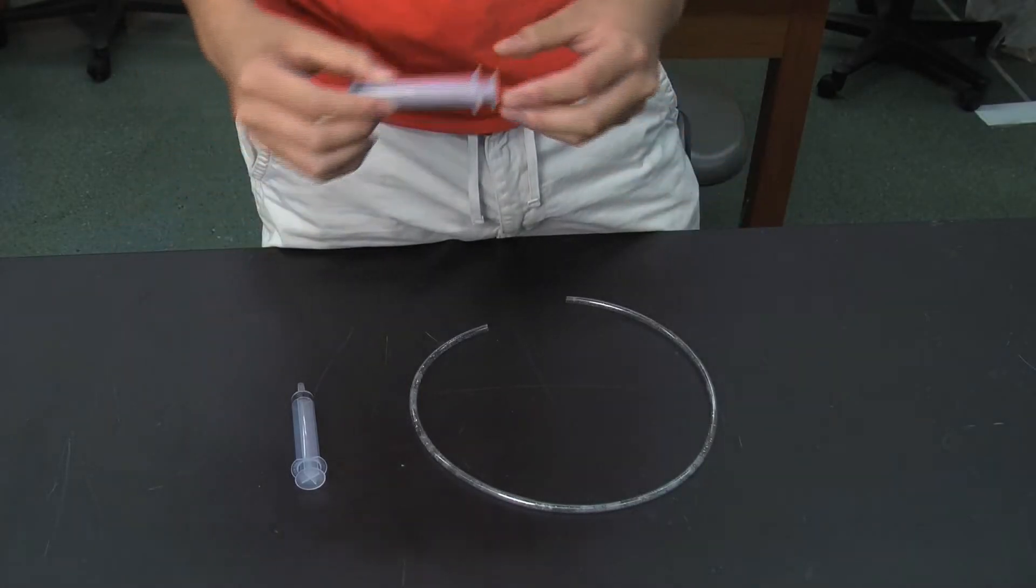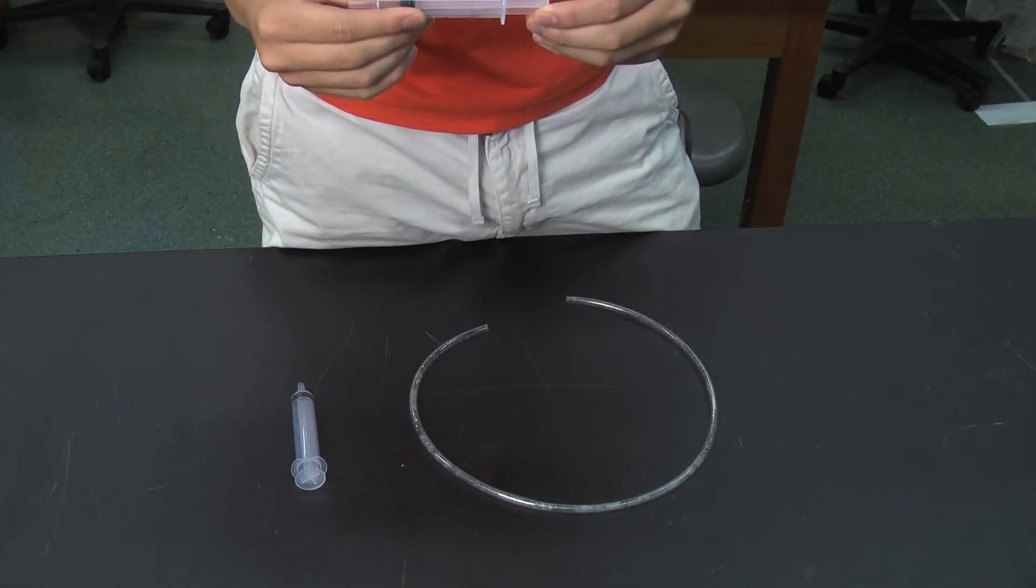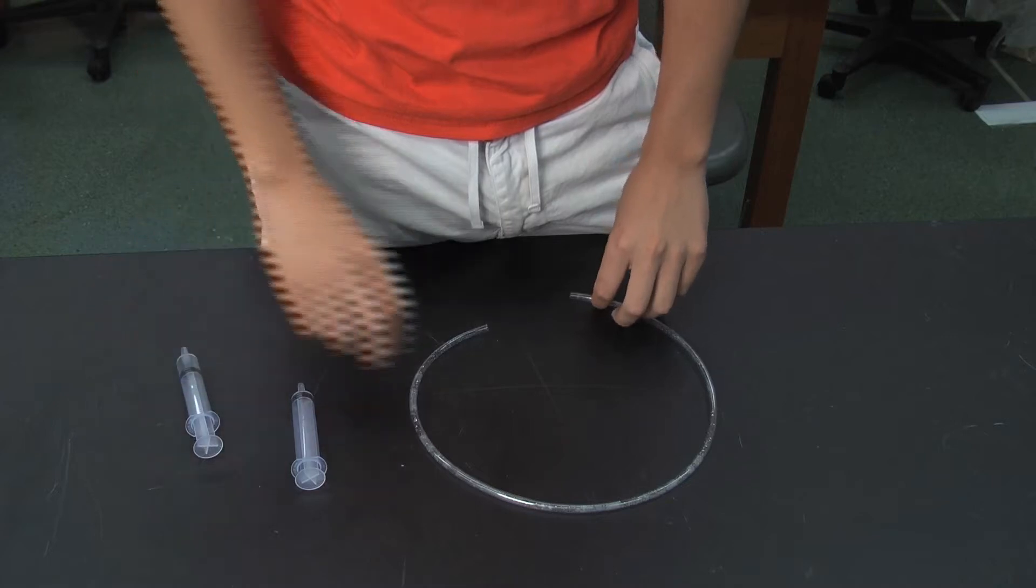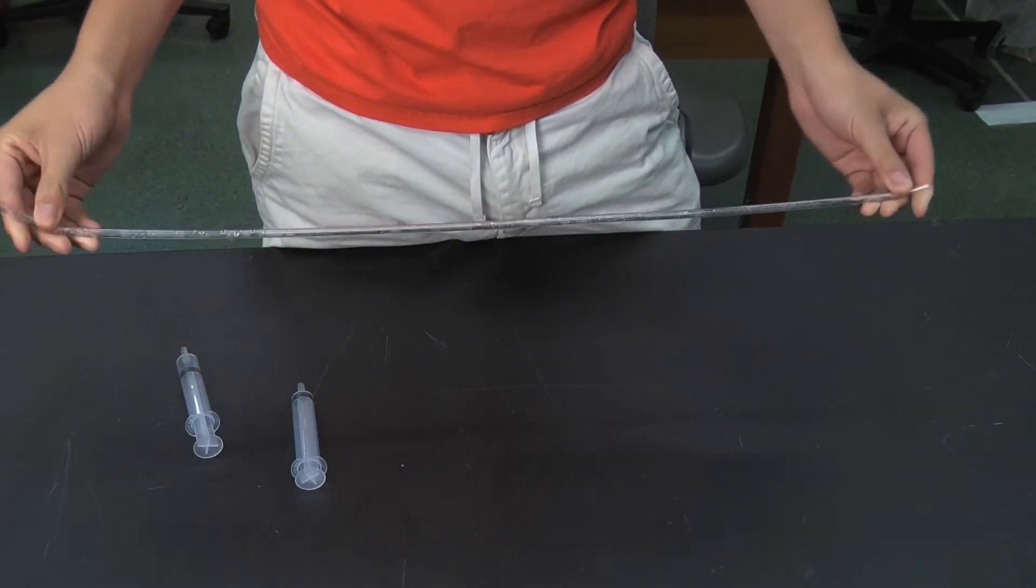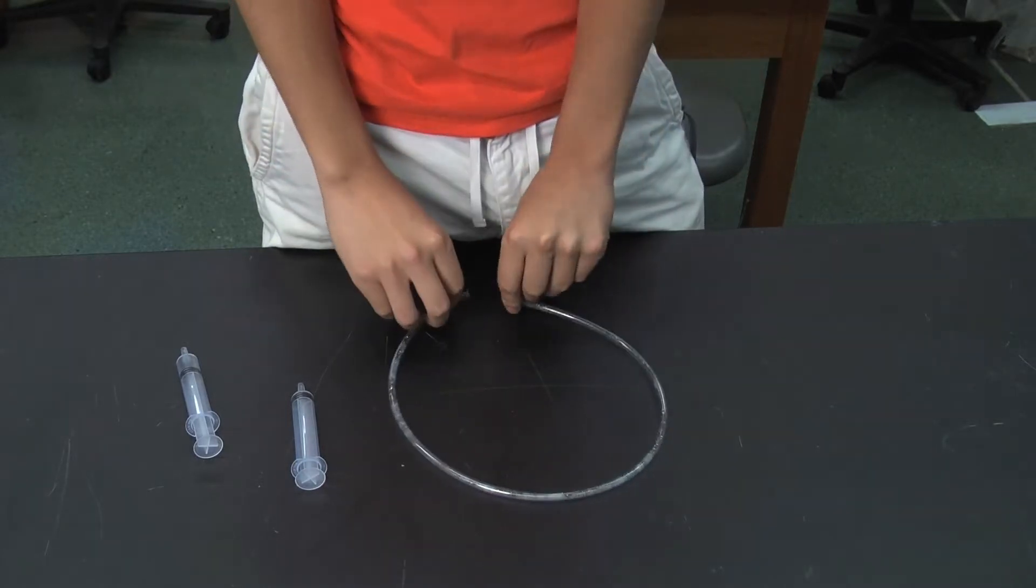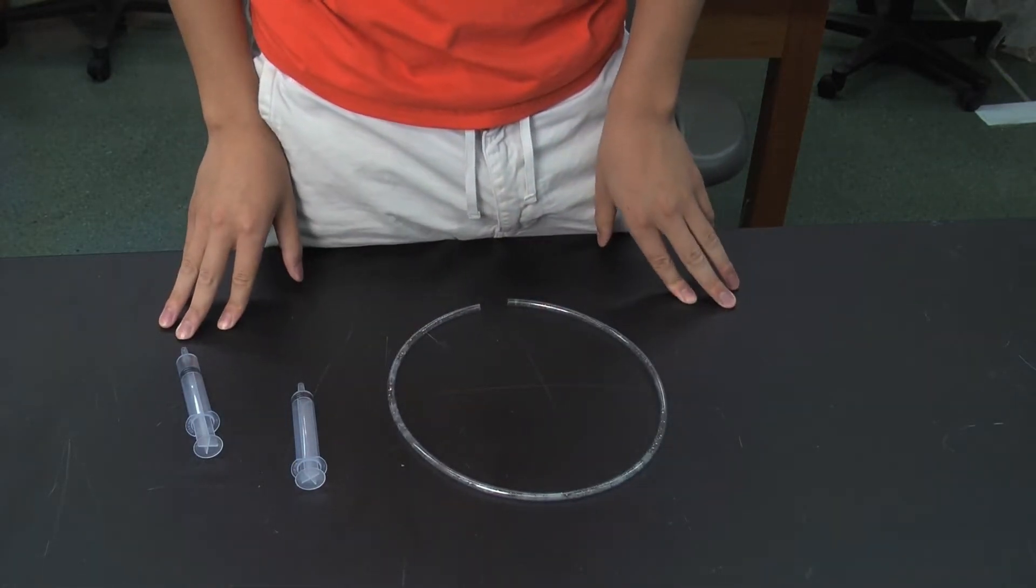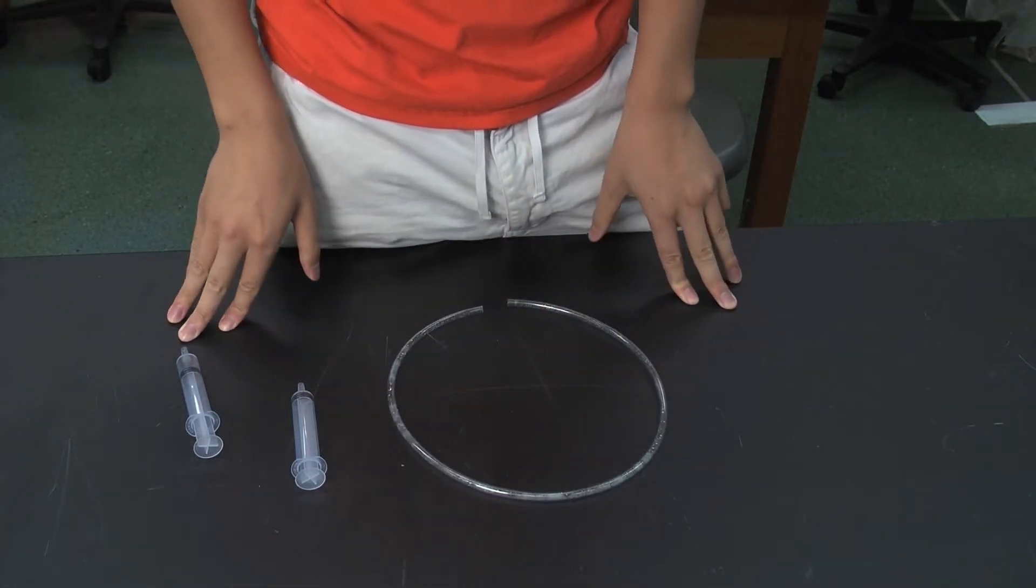Each student will need two 10-milliliter oral syringes and about one to two feet of quarter-inch clear plastic tubing. The class might also need scissors, a source of water such as a drinking fountain, sink, or a pitcher of water, and some towels just in case.